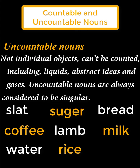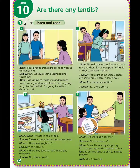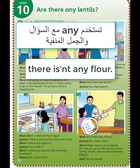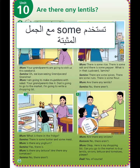لمعرفة المزيد عن الأسماء المعدودة وغير المعدودة، يمكنكم فتح الرابط الموجود في صندوق الوصف. Some و any هي من محددات الكمية — quantifiers — تستخدم مع كلا الاسمين المعدود وغير المعدود. تستخدم any عادة مع الأسئلة والجمل المنفية، مثل: are there any lentils? ومن أمثلة المنفي: there isn't any flour.